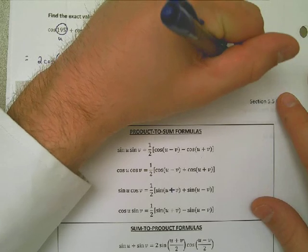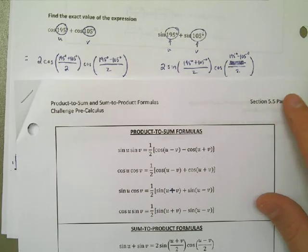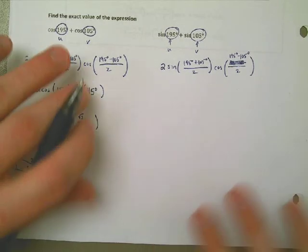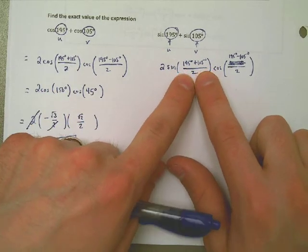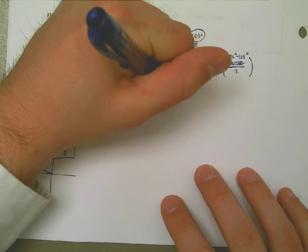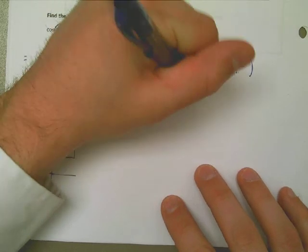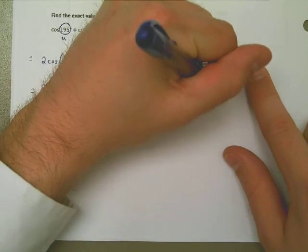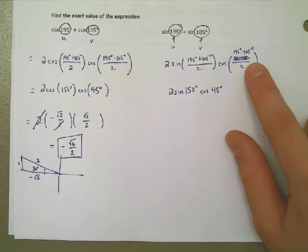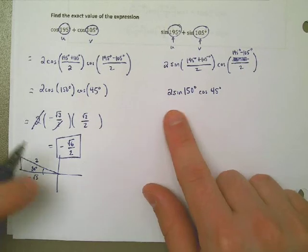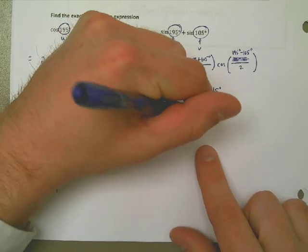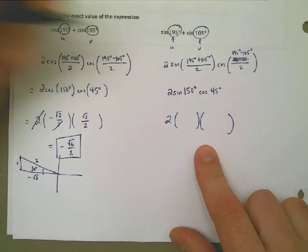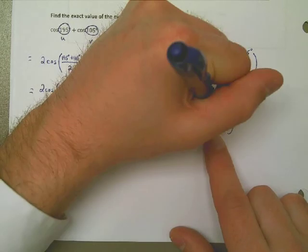So now we just need to simplify this. Once again, this ends up being 300. 300 divided by 2 is 150. 2 times the sine of 150 degrees times the cosine of 45. Same idea, simplify the stuff inside the parentheses. I already know that this is going to be 2 times something times something. The cosine of 45 we already know is the square root of 2 from the last example, over 2.